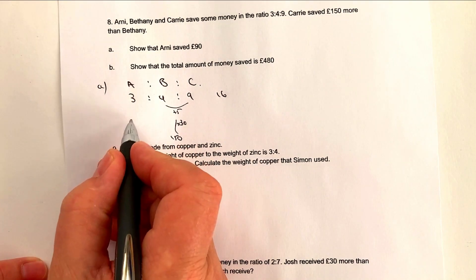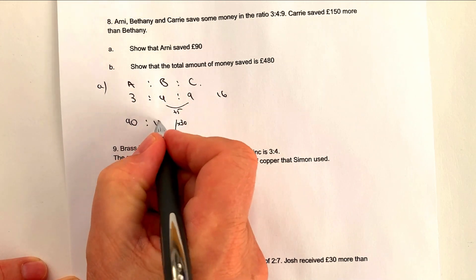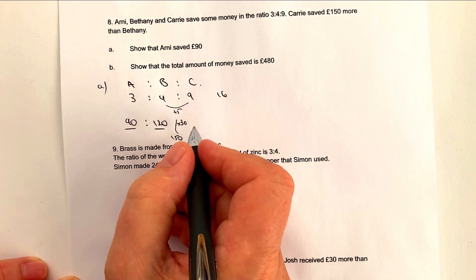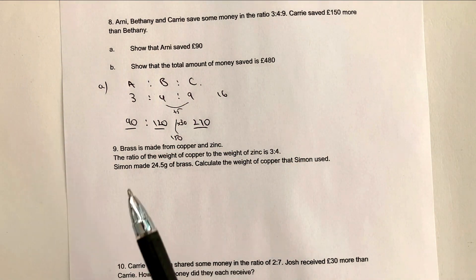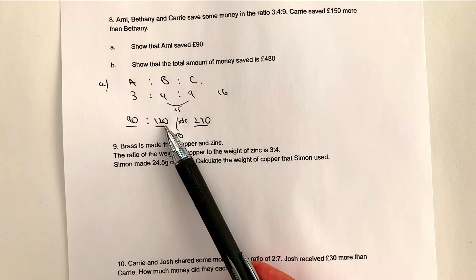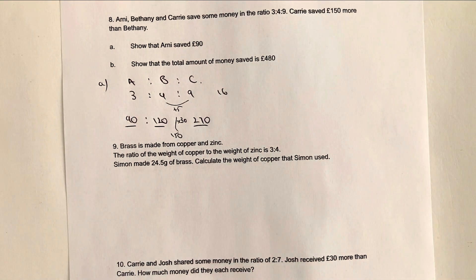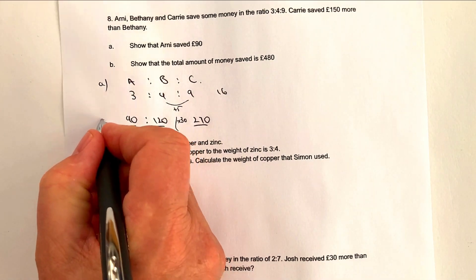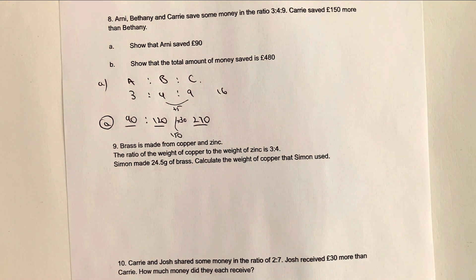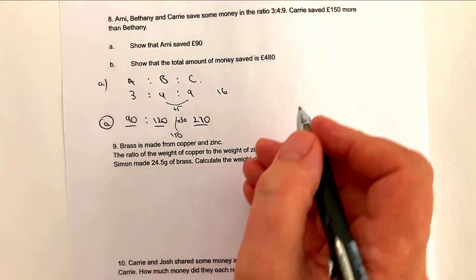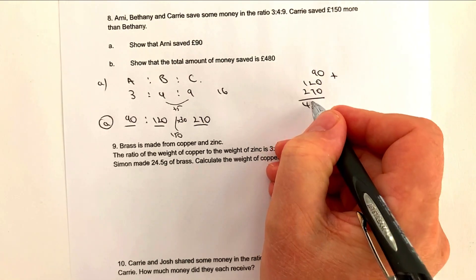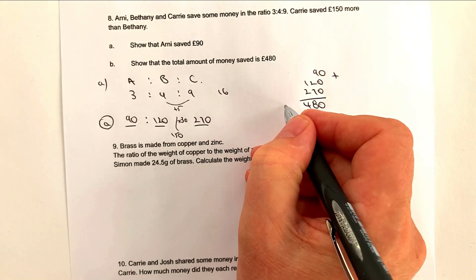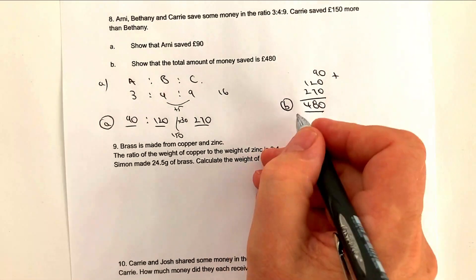What we end up getting is 3 times 30 is going to be 90, 4 times 30 is going to be 120, and 9 times 30 is going to be 270. So in this particular case, Arnie saved £90, Bethany saved £120 and Carrie saved £270. That would be part A. In part B, it says show that the total amount of money saved is £480. All we're doing is adding up these three amounts: £90 plus £120 plus £270, and if you add all of that up you're going to get £480.